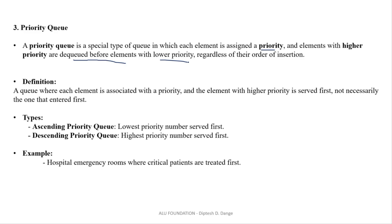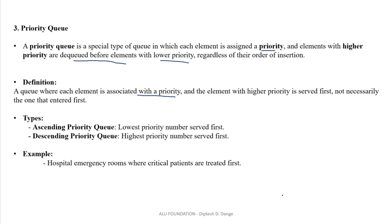Regardless of their order of insertion — कैसे भी insert हो, जिसके पास higher priority होगी, वो पहले element dequeue होगा हमारे Queue से। अगर priority Queue lower priority का use कर रहे हैं, तो जिस element के पास lower priority होगी, वो पहले remove हो जाएगी। हर एक element के पास एक priority होती है और कौन सा element पहले remove होगा, it is dependent upon the priority। अगर आपने operating system पढ़ा है, तो unit number 3 में priority Queue है — same concept है।